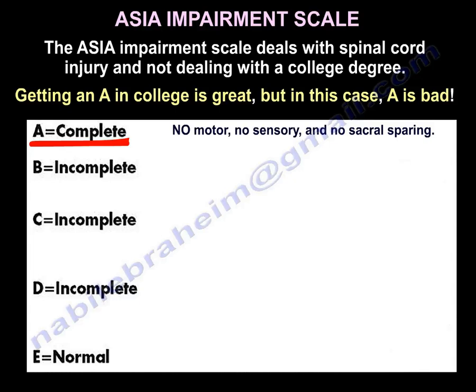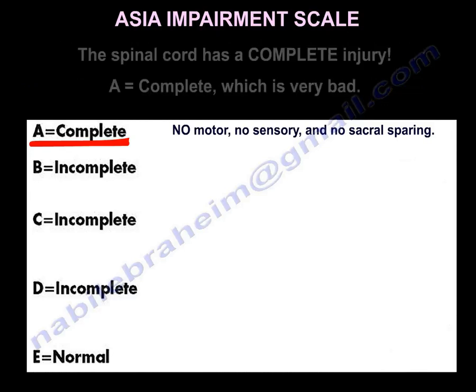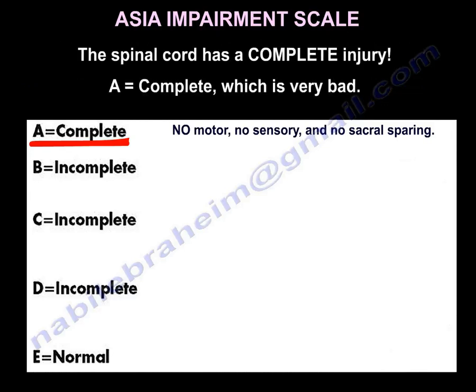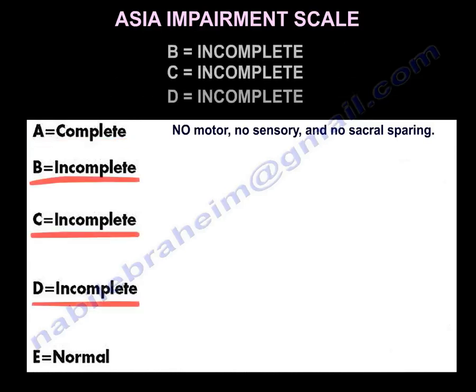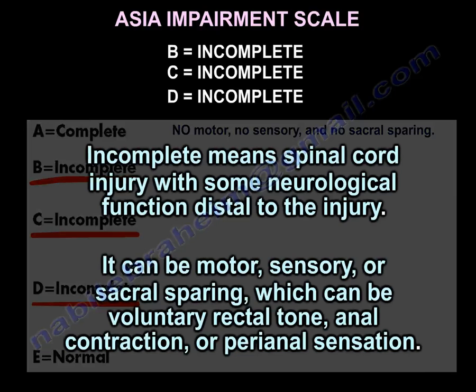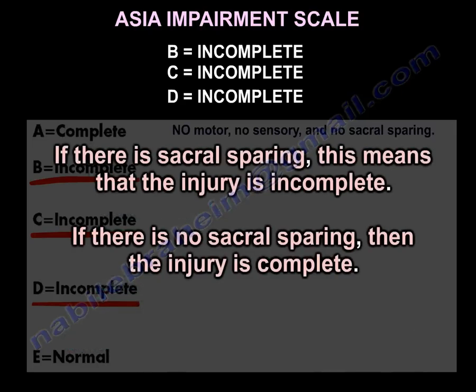The ASIA impairment scale deals with spinal cord injury, not a college degree. In college, getting an A is great - but in spinal cord injury, if you get A, it is bad. Complete. Grades B, C, and D are incomplete, meaning spinal cord injury with some neurological function distal to the injury. It can be motor, sensory, or sacral sparing - voluntary rectal tone, anal contraction, or peri-anal sensation. If there is sacral sparing, the injury is incomplete; if no sacral sparing, the injury is complete.